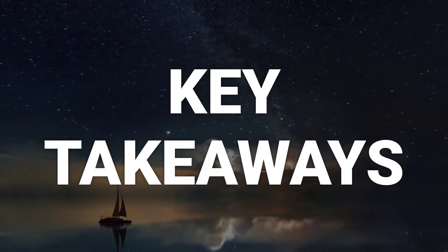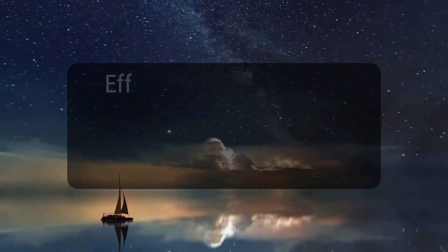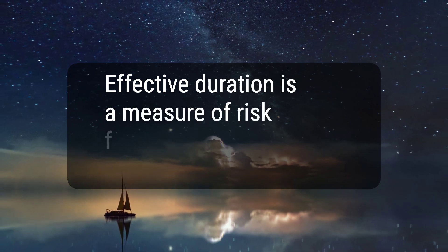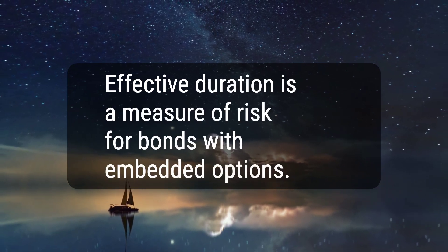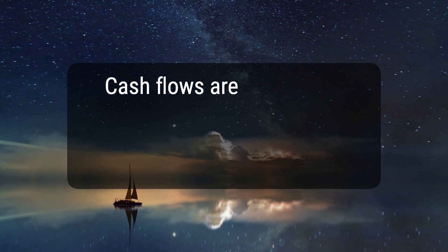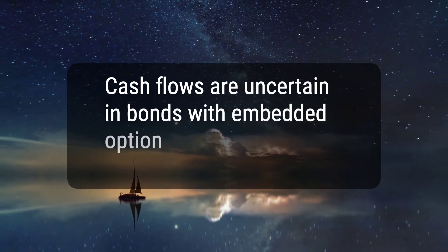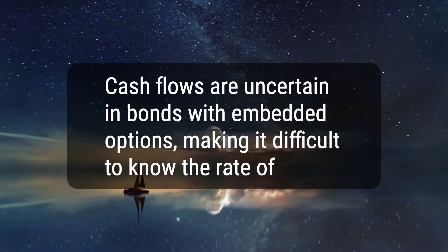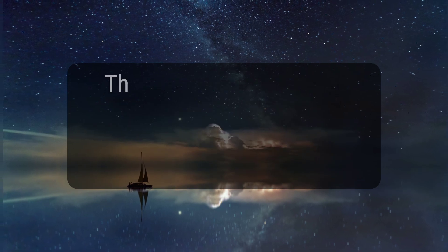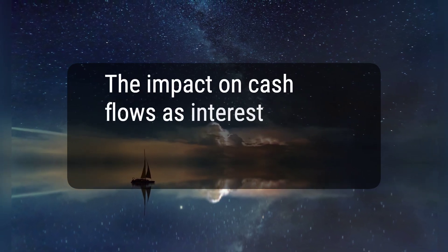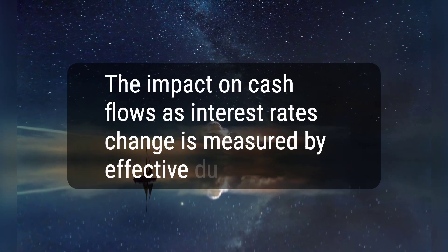Here are three key takeaways. 1. Effective duration is a measure of risk for bonds with embedded options. 2. Cash flows are uncertain in bonds with embedded options, making it difficult to know the rate of return. 3. The impact on cash flows as interest rates change is measured by effective duration.